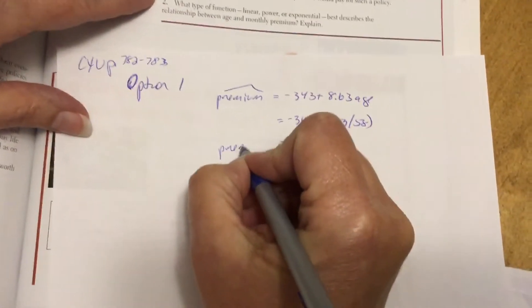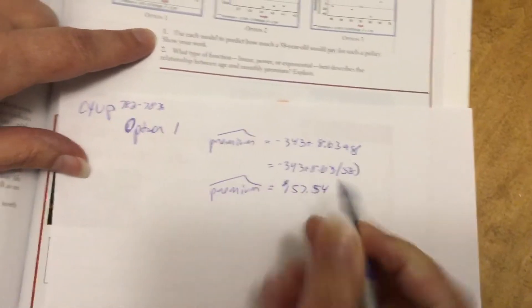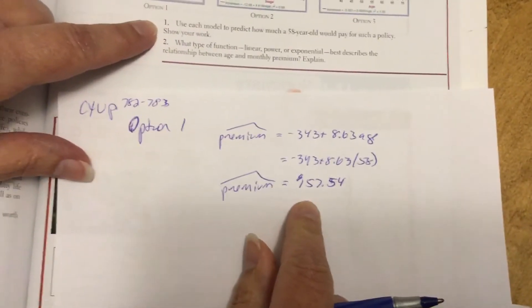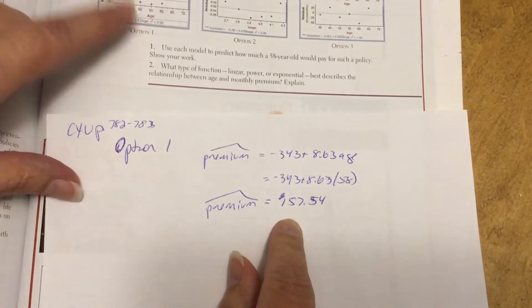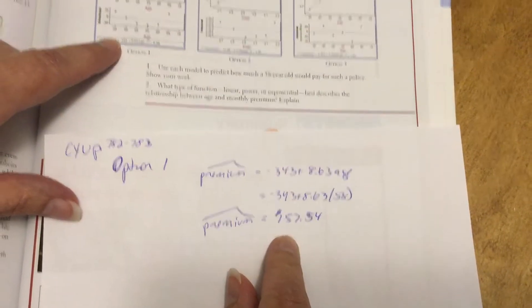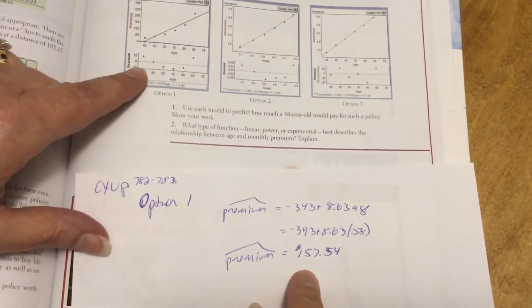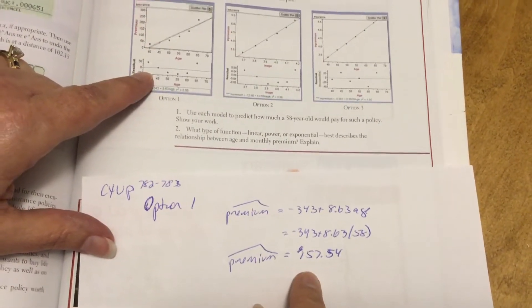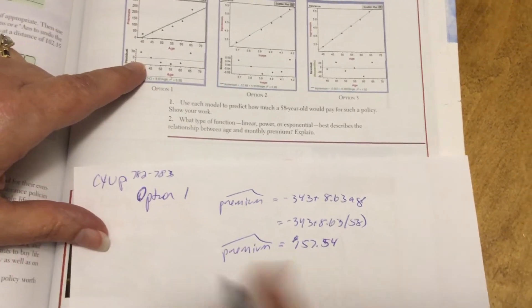So that would be my predicted premium of my life insurance policy for a 58-year-old using my straight linear regression, which again, isn't the best fit because my residual has a distinct pattern.